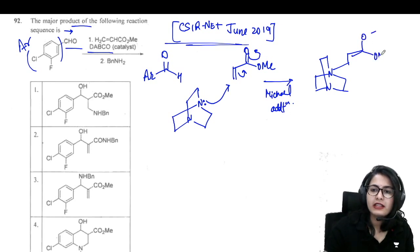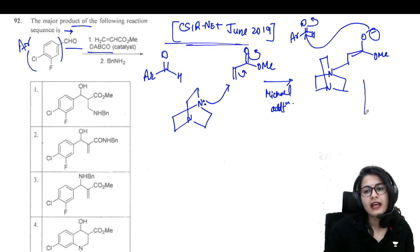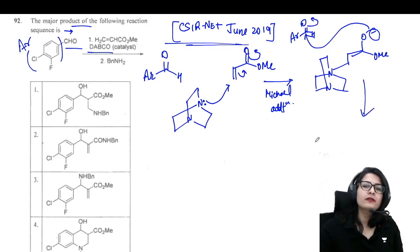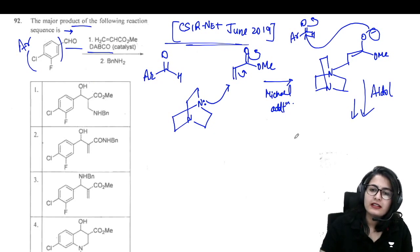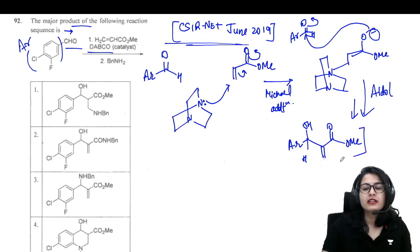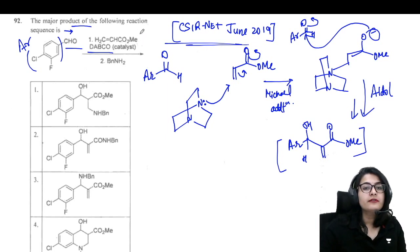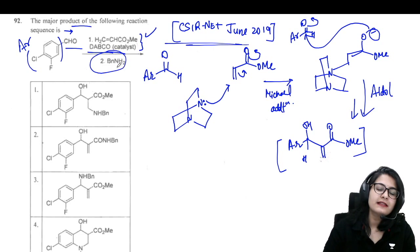DABCO first attacks the alpha-beta unsaturated ester via Michael addition, giving the enolate-type intermediate. The enolate O⁻ then attacks the aldehyde carbon — this is your aldol step and your carbon electrophile. The product of this first step — the Baylis-Hillman step — is the alpha-carbon connected to a new bond from the alpha position of the electron-poor alkene to the former aldehyde carbon, giving an allylic alcohol with COOMe and the Ar group.